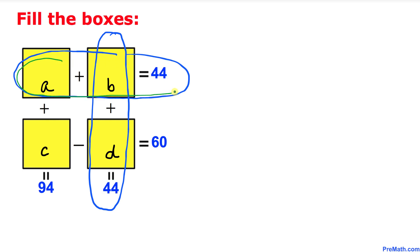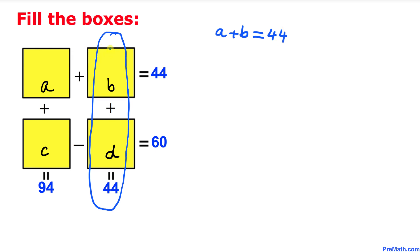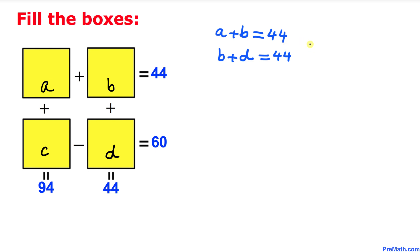A plus B equals 44. And now let's also write that B plus D equals 44.